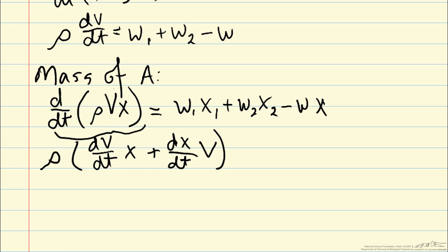So we can write rho V dX dt equals W1 X1 plus W2 X2 minus WX. And then we need to move that dV dt term to the other side. So we have minus rho times X times dV dt.